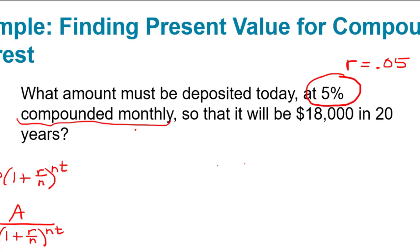And monthly tells you that the number of compounding periods per year n is 12. And we want it so that it will be $18,000 in 20 years. So the accumulated amount in the account or future value should turn out to be 18,000. And the number of years t is 20.